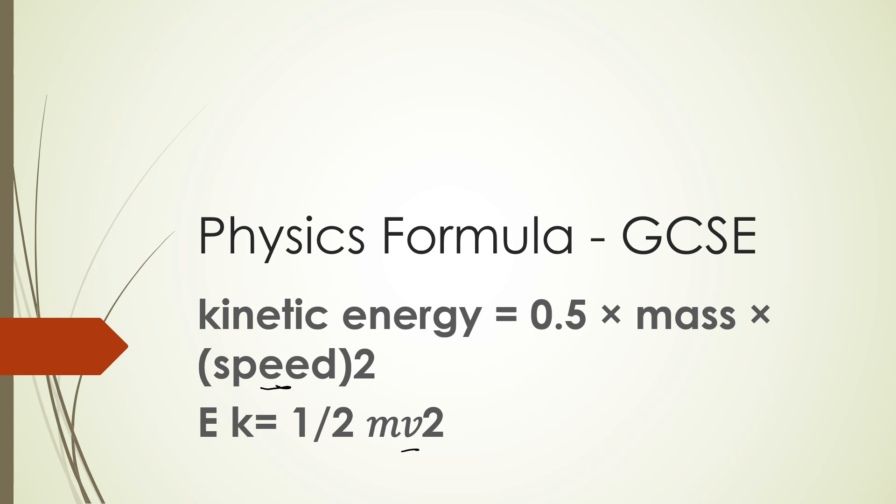So you will always square the velocity or speed and then multiply by mass and then put in 0.5 on a calculator.